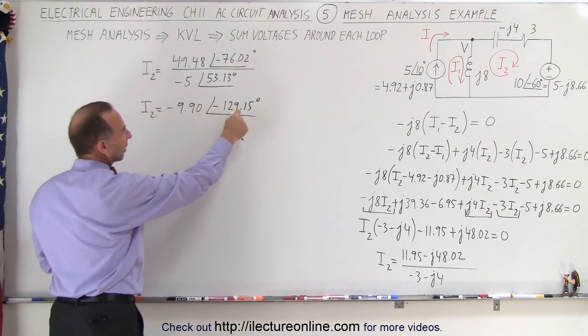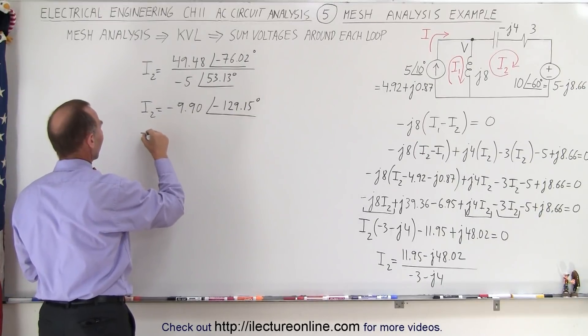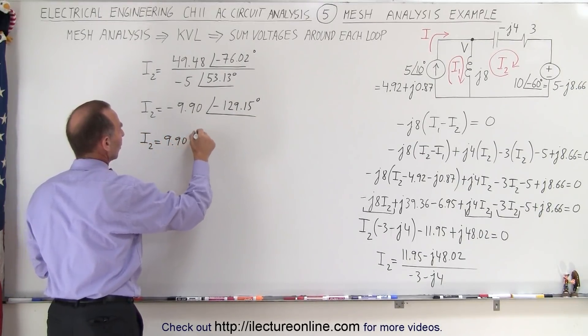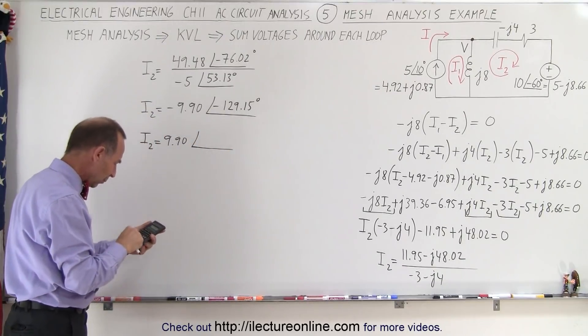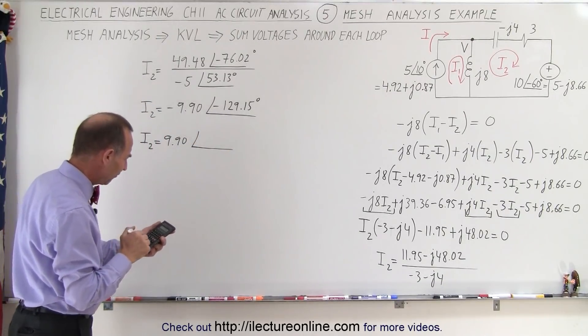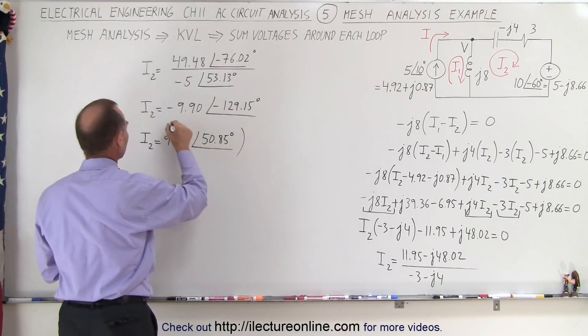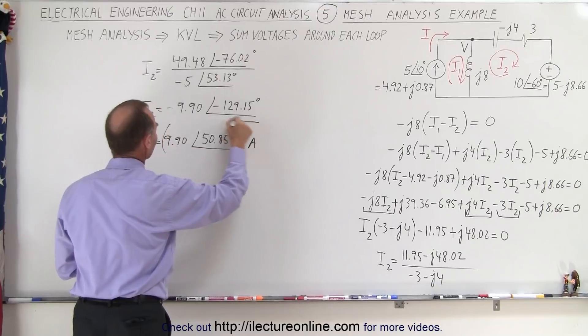Now we can get rid of this negative sign by adding 180 degrees to that so we have I2 is equal to a positive 9.90 with a phase angle of add 180 to that we get 50.85 degrees. And of course that would be the current in amps.